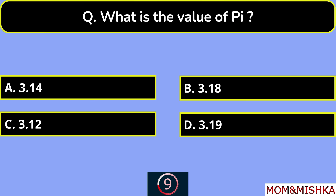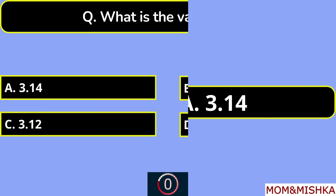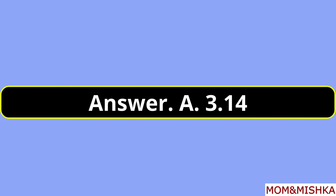What is the value of pi? The value of pi is 3.14. Option A.